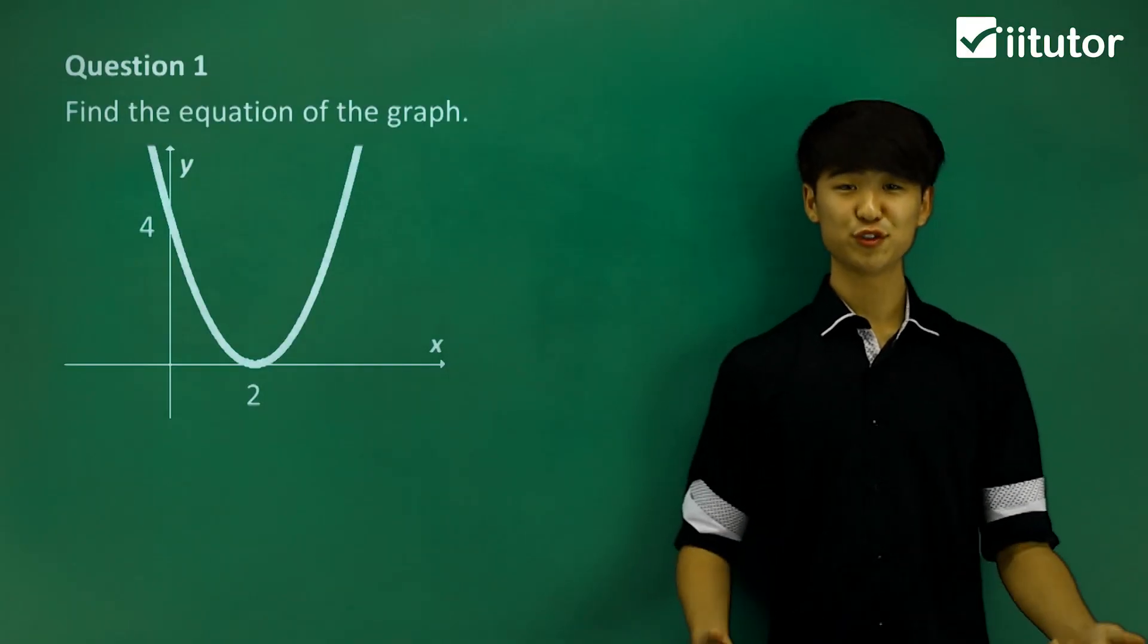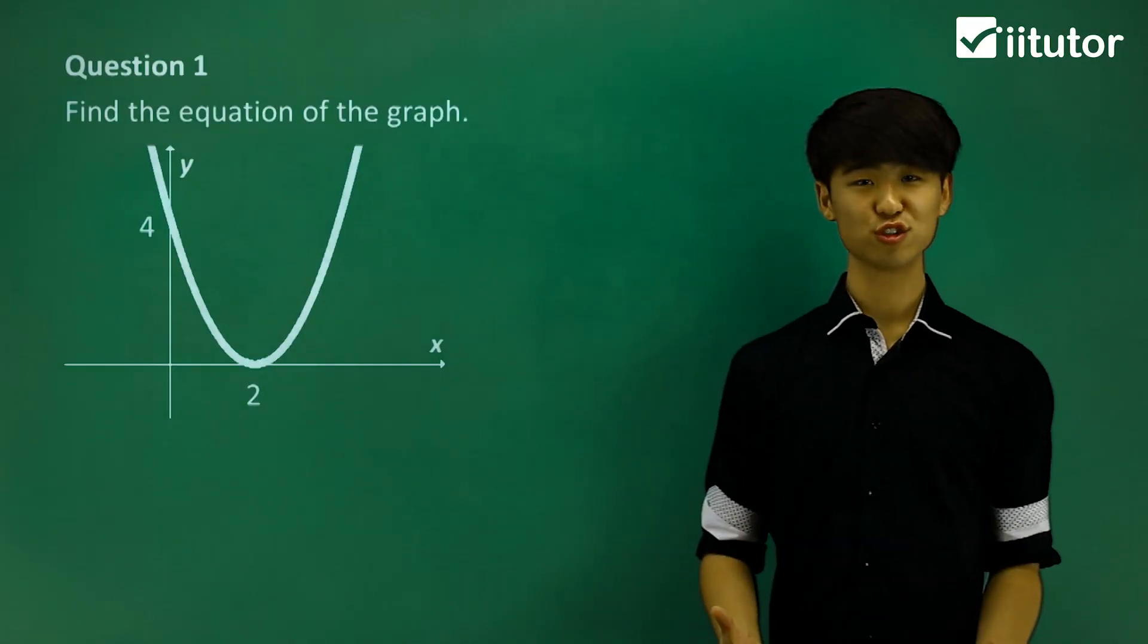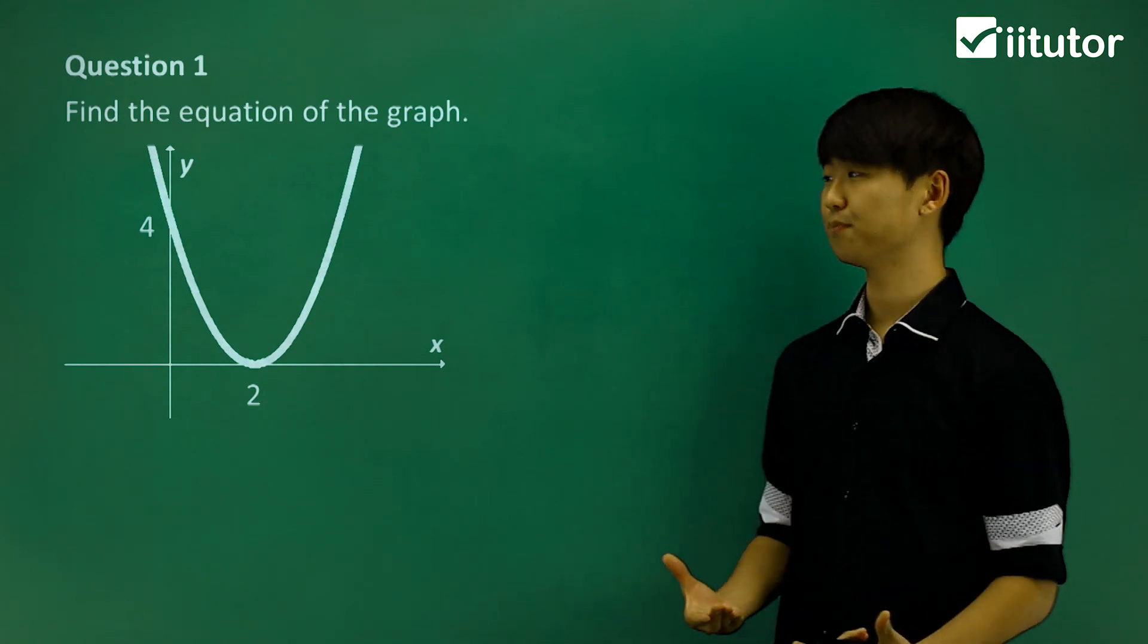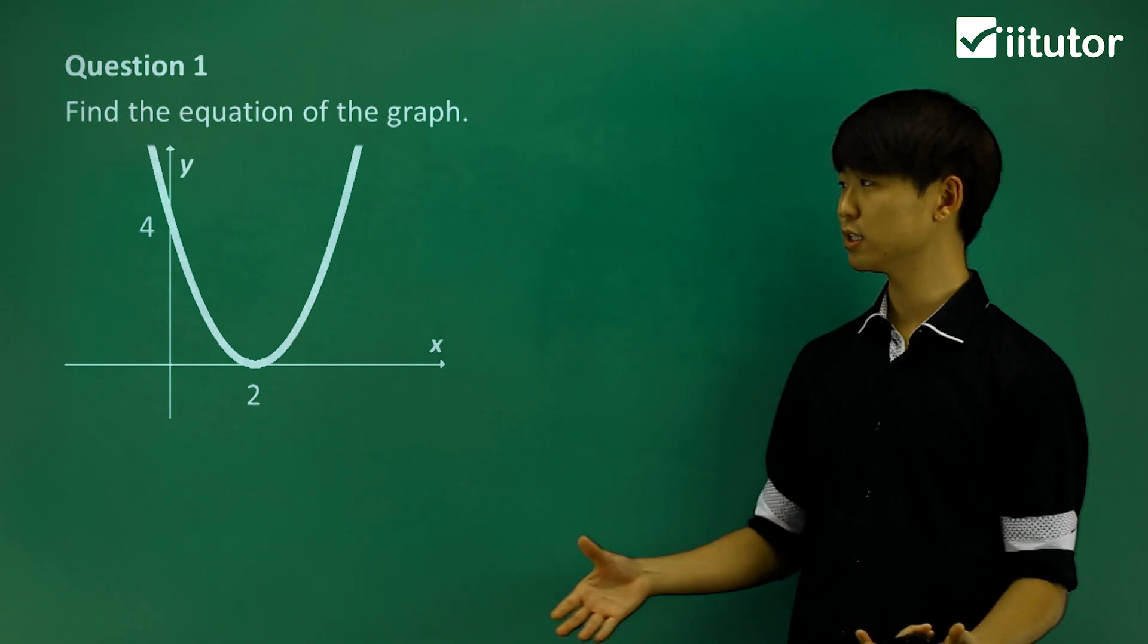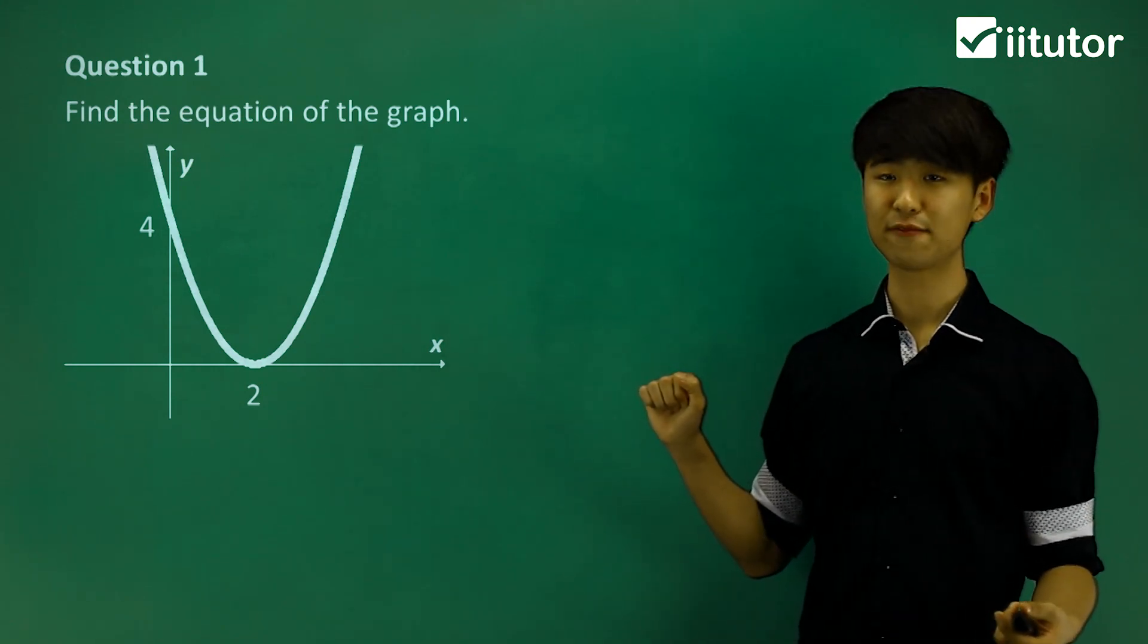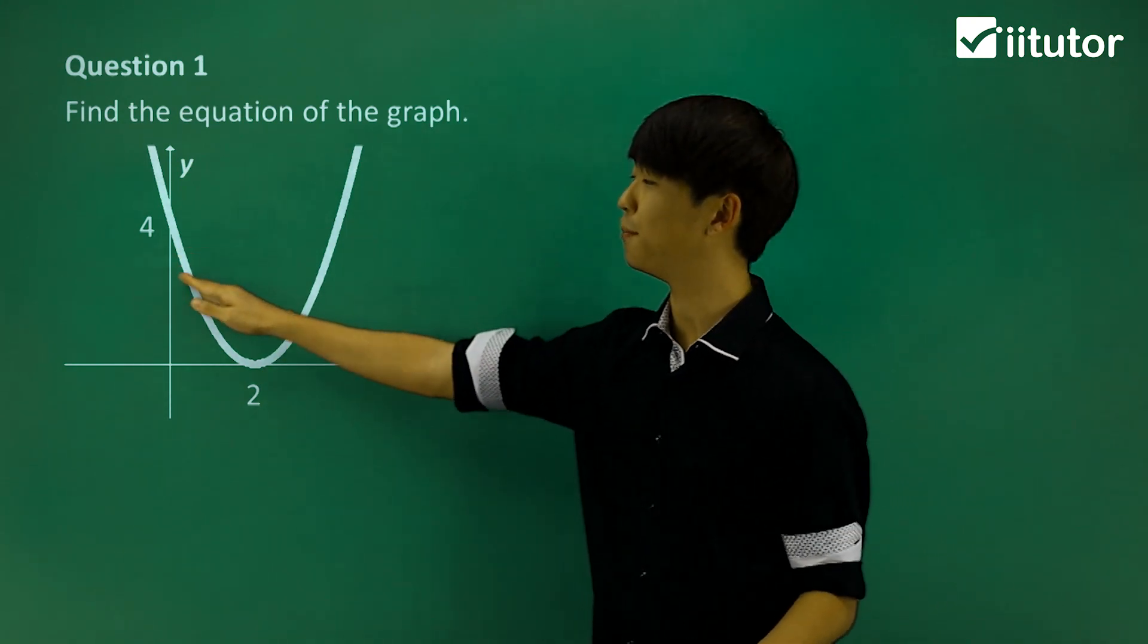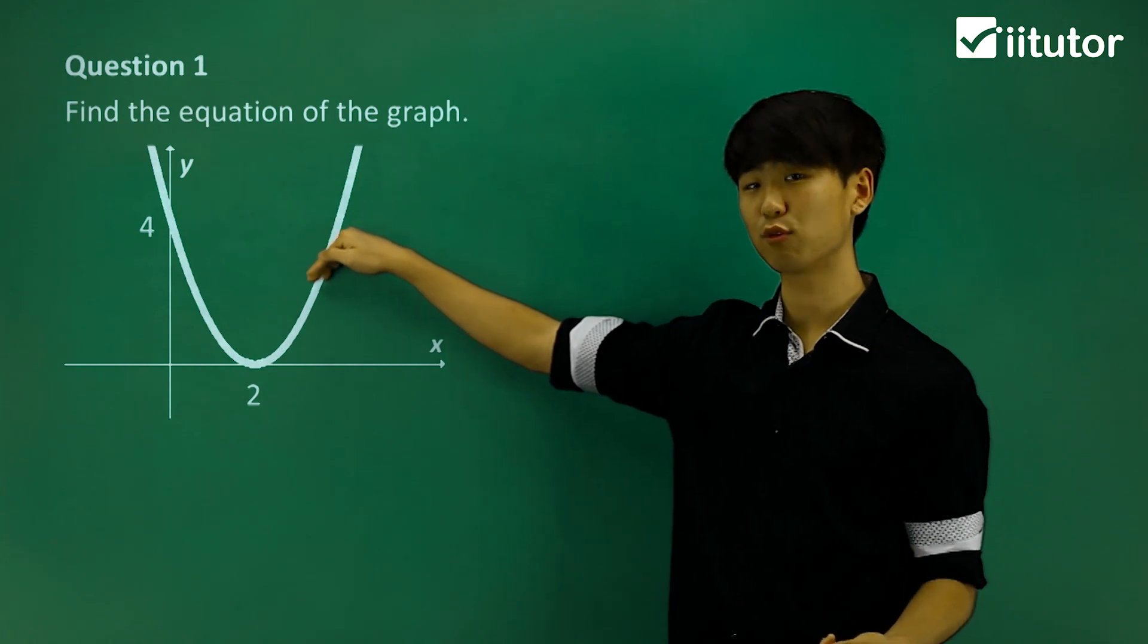We're going to be looking at quadratic graphs that have double roots. So when a quadratic graph has a double root, it's going to look like this graph that we have here. So it's going to bounce off at that double root.